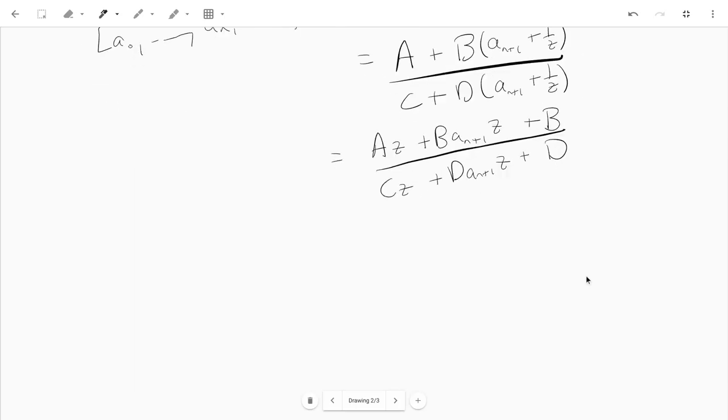And I get b plus b a n plus 1 plus a times z. And on the denominator, I get d plus d a n plus 1 plus c times z.